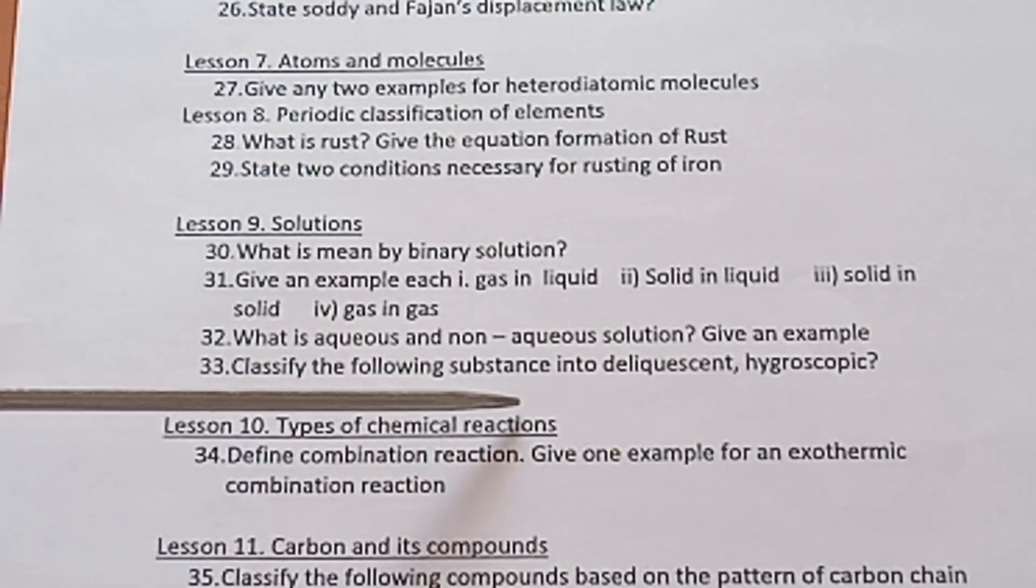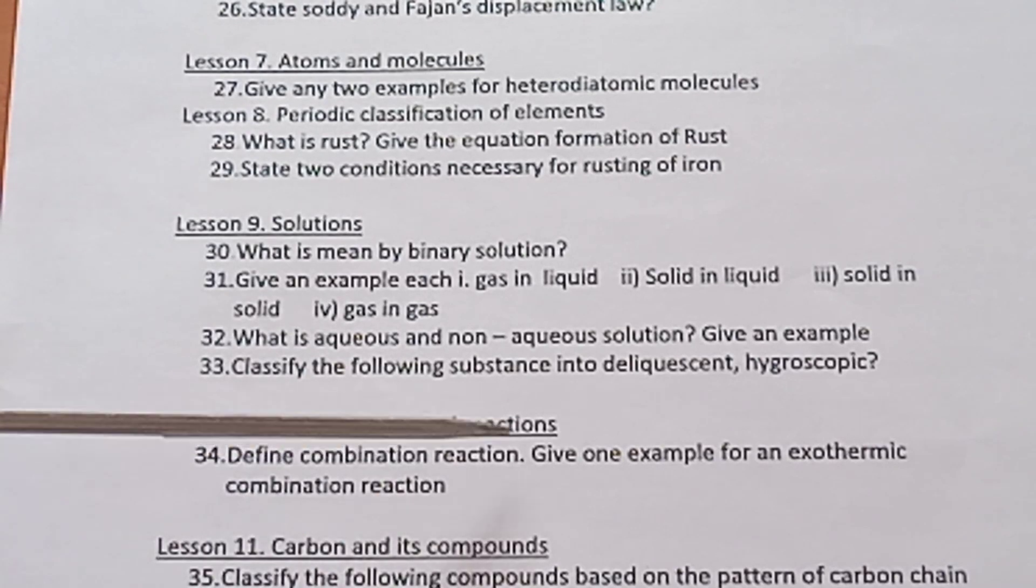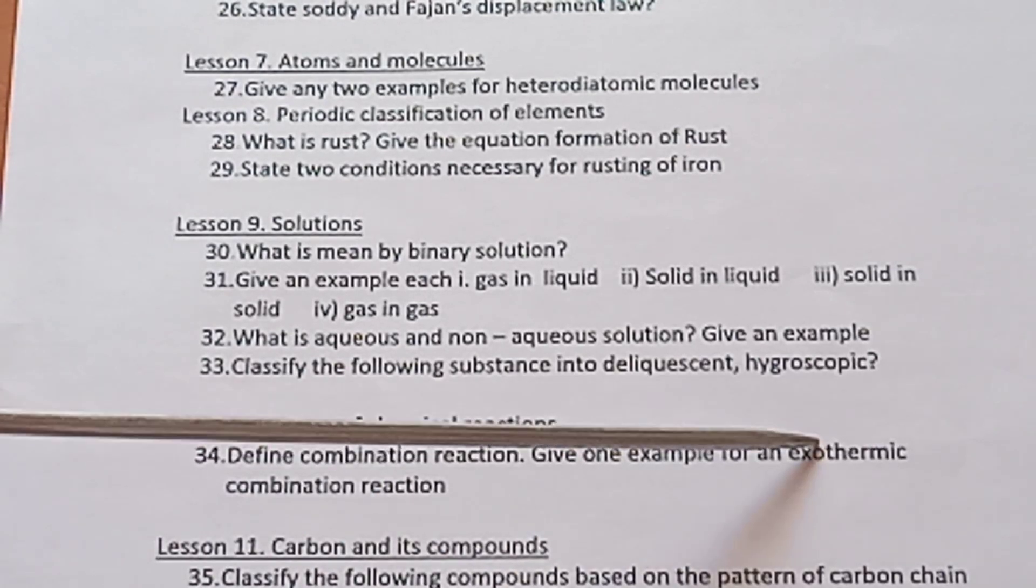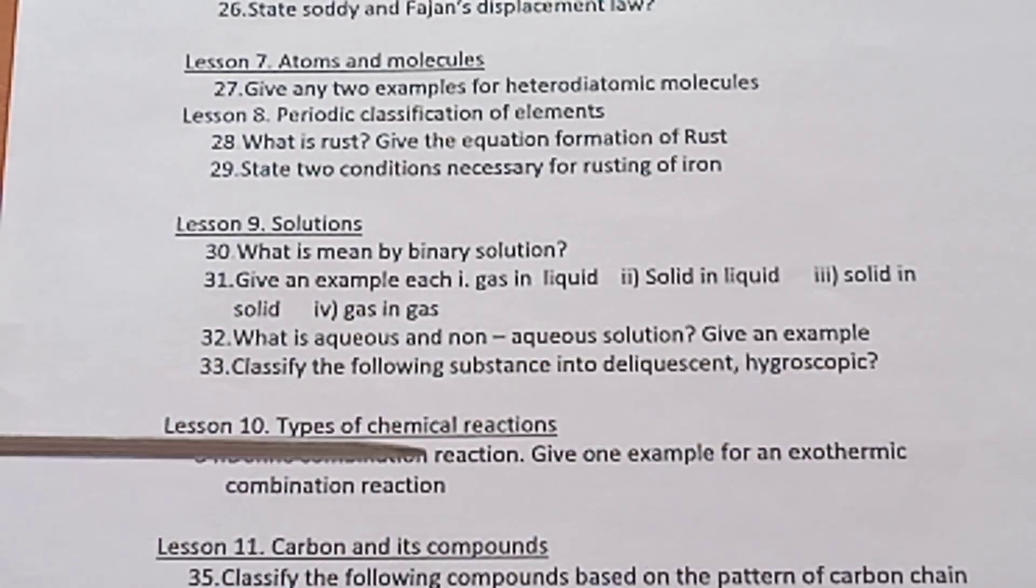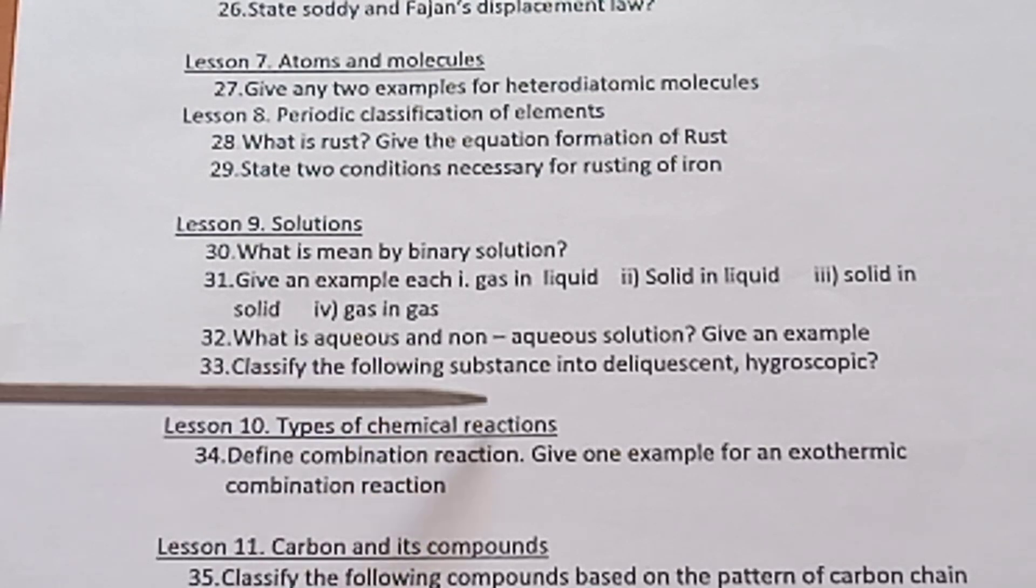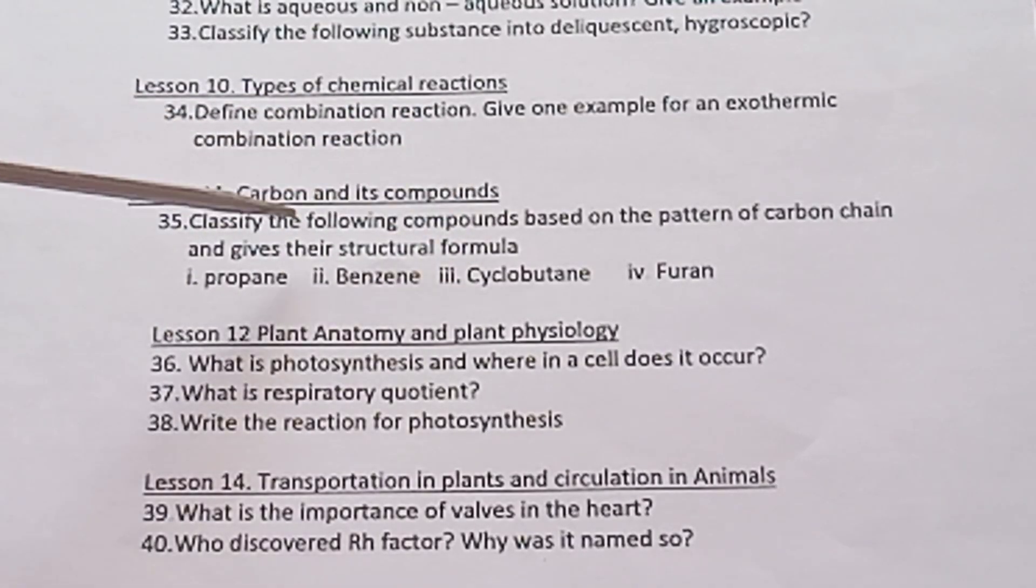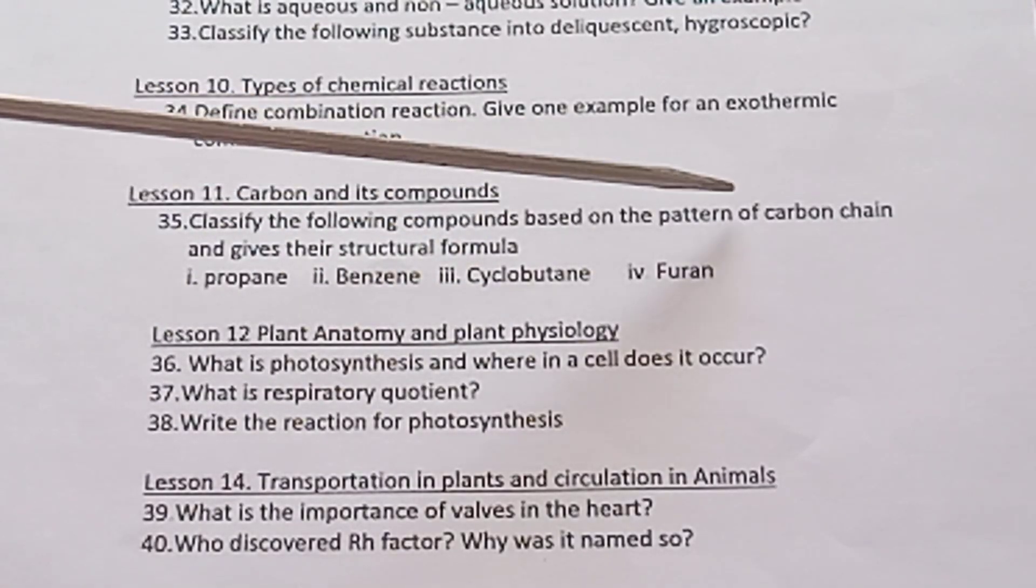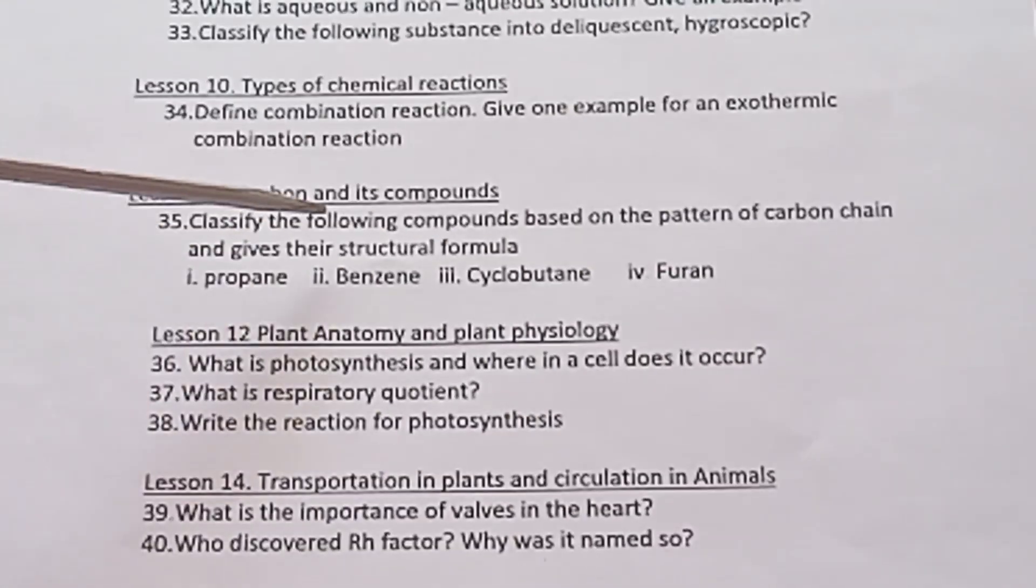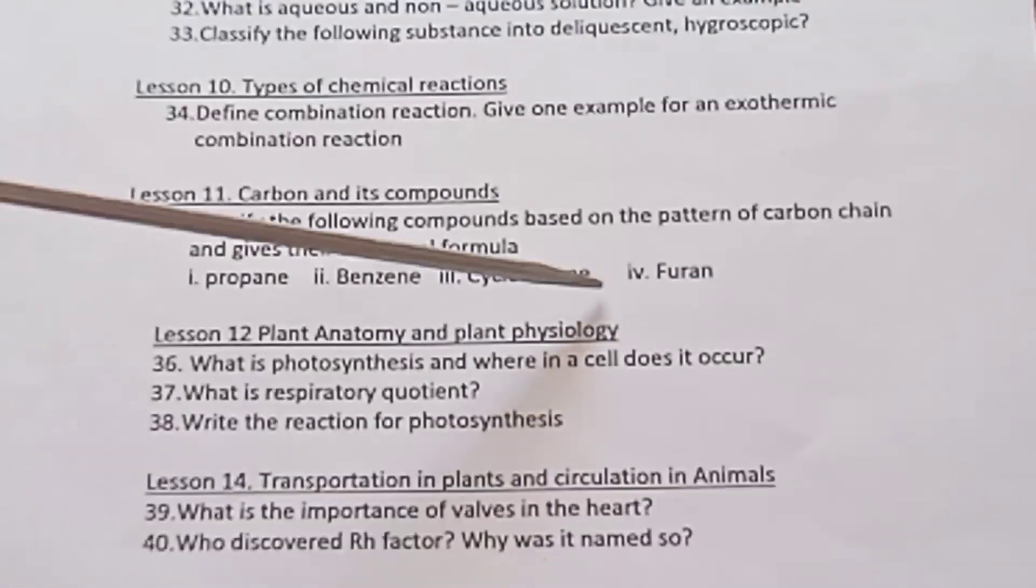Lesson 10 Types of Chemical Reactions. Define combination reaction. Give one example of an exothermic combination reaction. What is combination reaction? You have to write down one equation for that. Lesson 11 Carbon and Its Compounds. Classify the following compounds based on the pattern of carbon chain and give the structural formula: propane, benzene, cyclobutane, furan. Each one carries half mark.